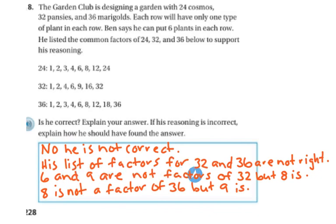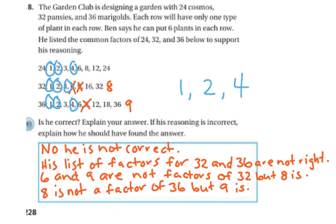So no, he is not correct. He lists the factors for 32 and 36, but they're not right. 6 and 9 are not factors of 32. So 6 and 9 are not factors of 32, but 8 is. And 8 is not a factor of 36, but 9 is. So the factors that they have in common are 1s, 2s, 4s, and that's it. So he could only put them in rows of 1, in rows of 2, or in rows of 4. So 6 is not an option.